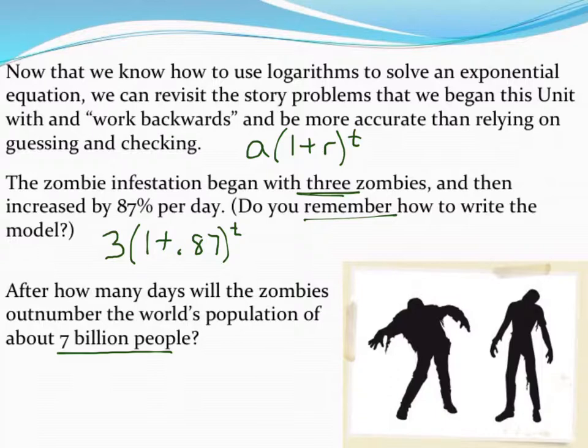That's seven with nine zeros, and so the equation I'm going to write then is 7 billion, so start writing out all your zeros, and then equals the model we just wrote. So three times, I'm just going to go ahead and add those together, so it's 1.87 raised to the t power.